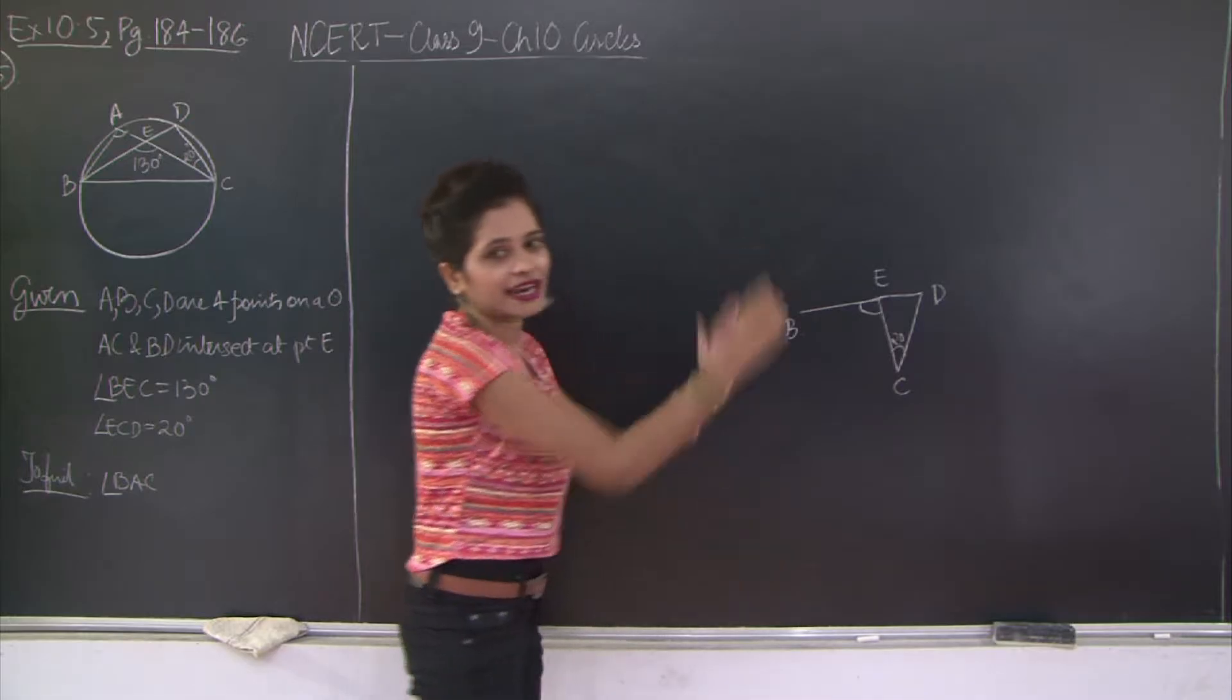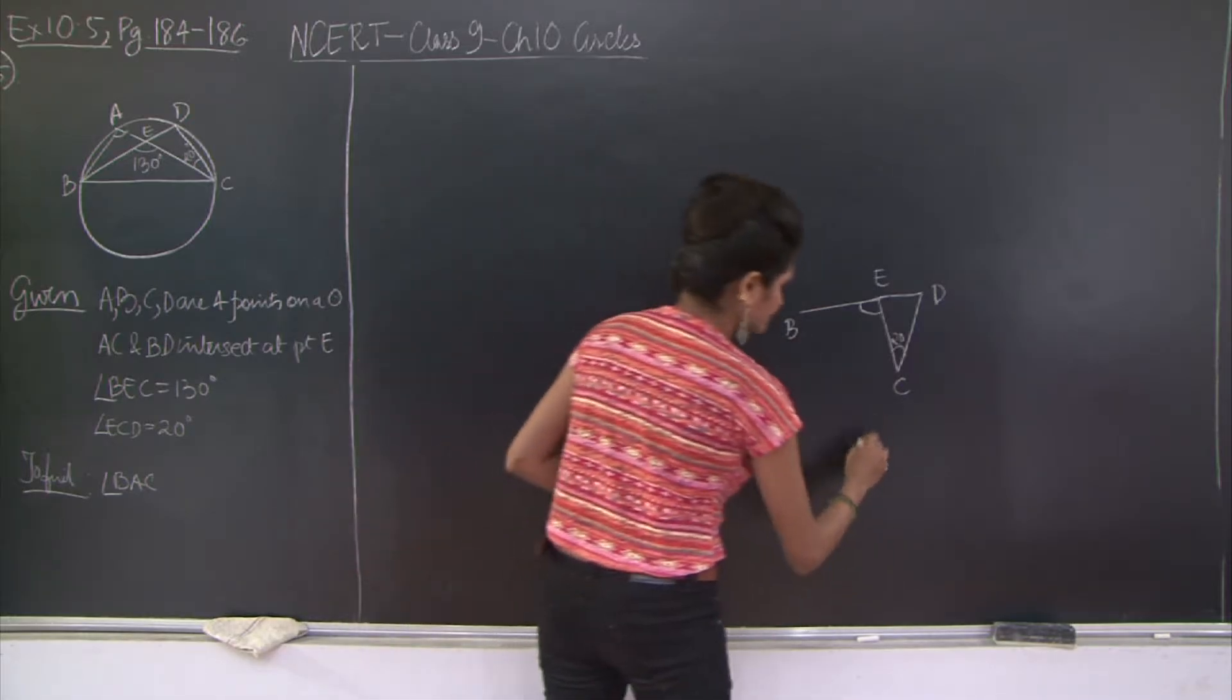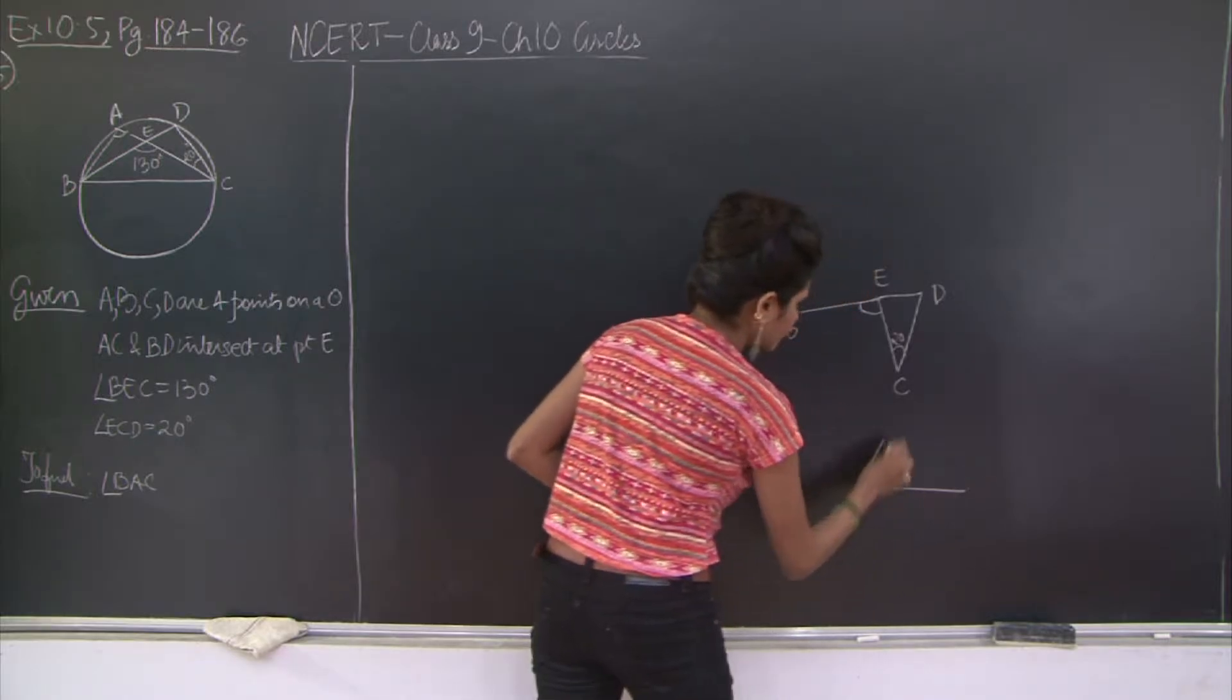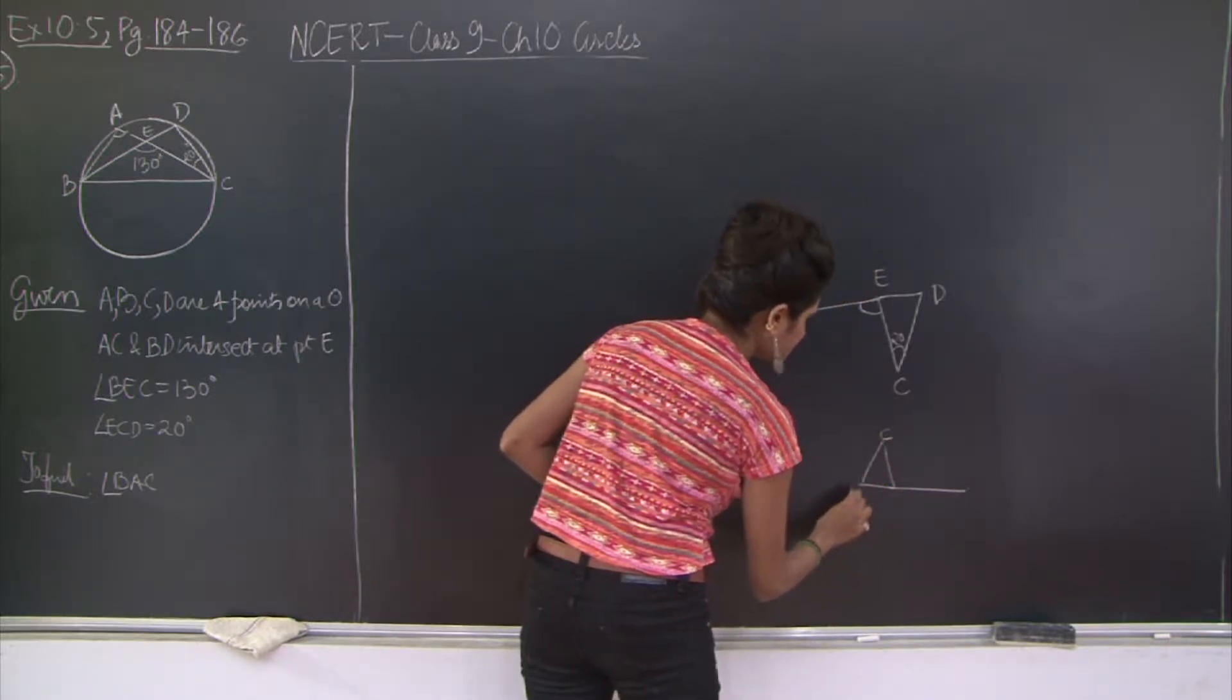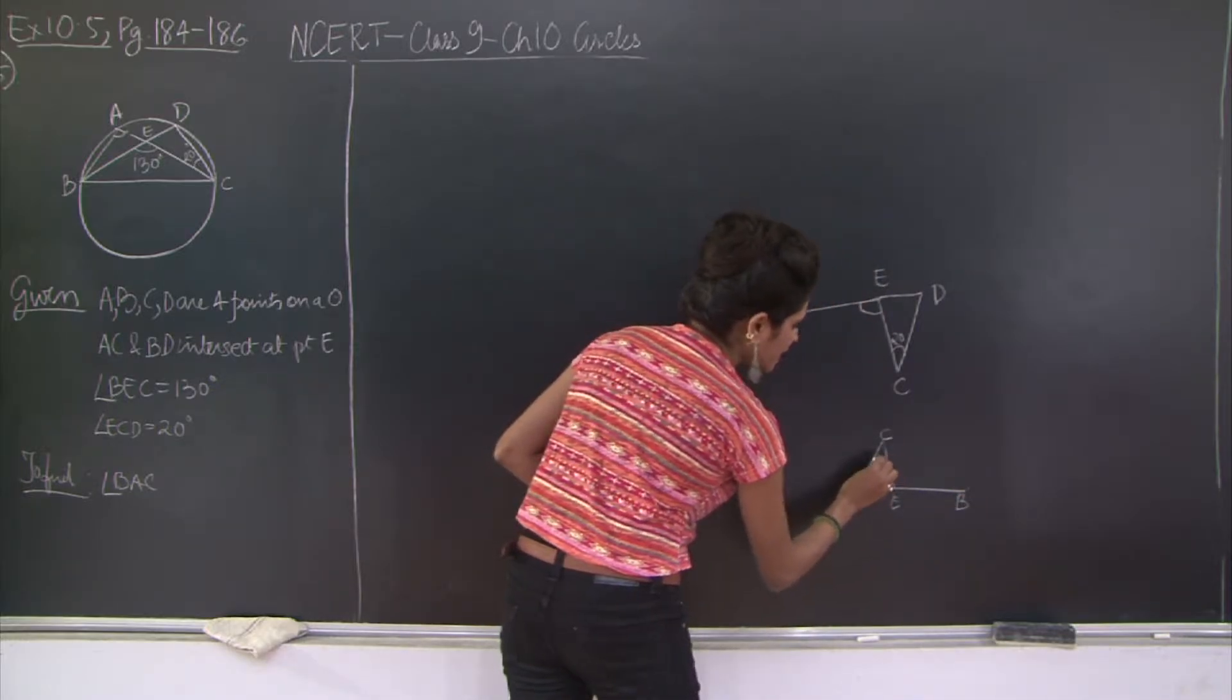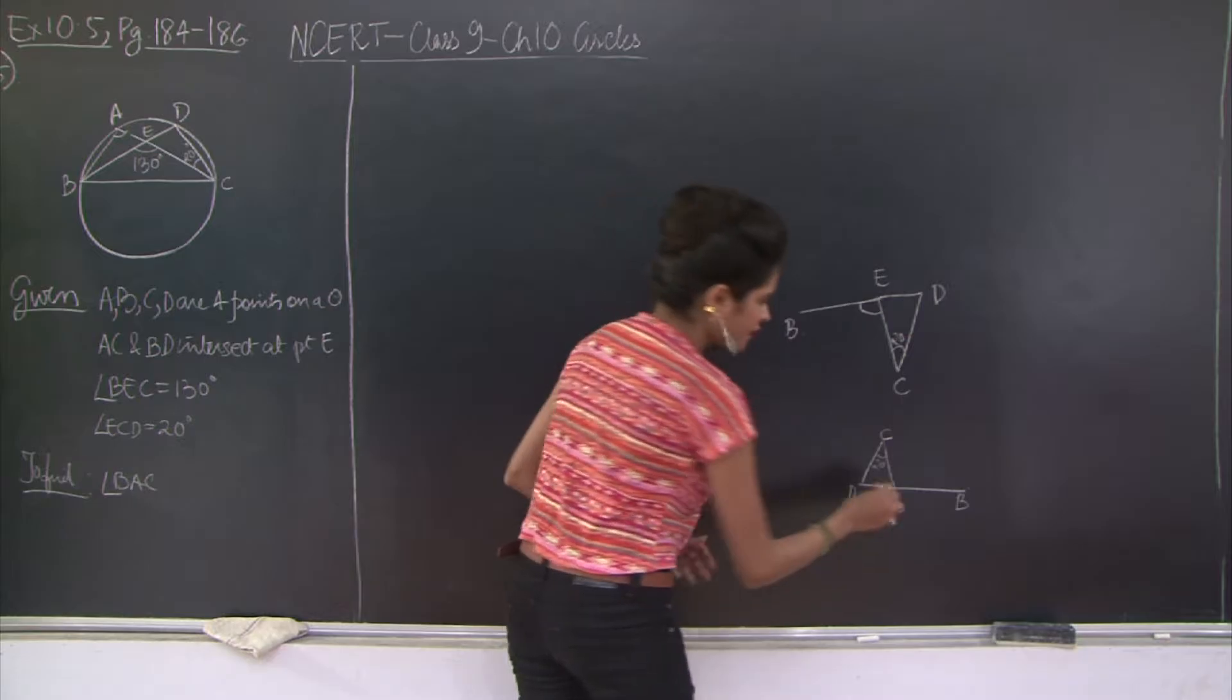So don't you think this angle out here is the exterior angle for triangle CED? If you still did not get it, let me just tilt this for you. So I have C, D, E, and B.